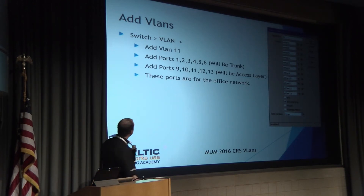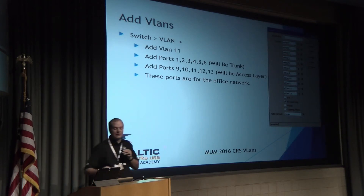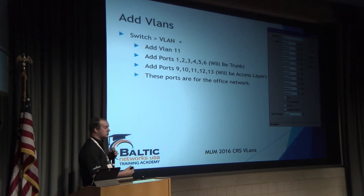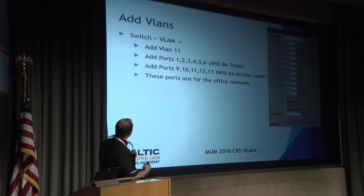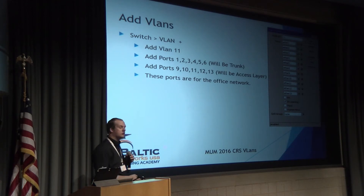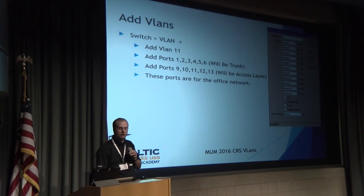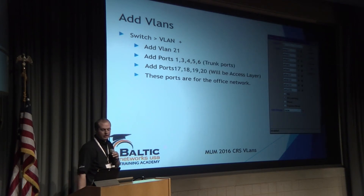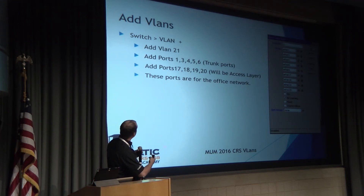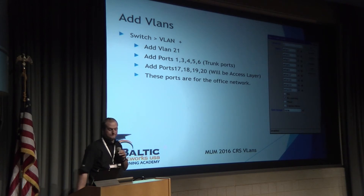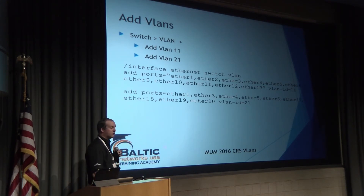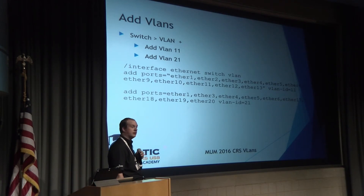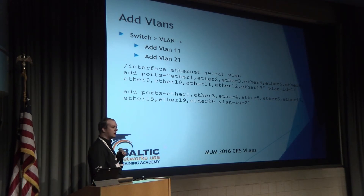Next, we add different ports to the VLANs. For VLAN 11, go into the switch chip, navigate to VLAN, and hit Add VLAN. We're adding ports 1, 2, 3, 4, and 5 as trunk ports, and ports 9, 10, 11, 12, and 13 as access layer ports for the office network. The same process is then repeated for the guest VLAN 21. The CLI equivalents are also shown. I'd recommend getting to know the CLI — it's an extremely useful tool.